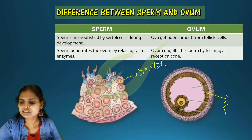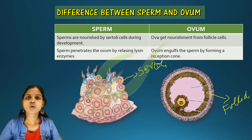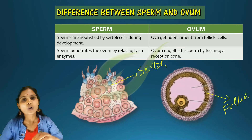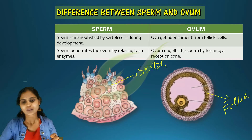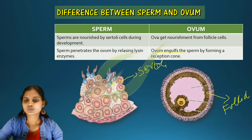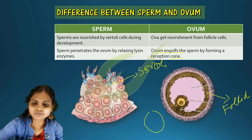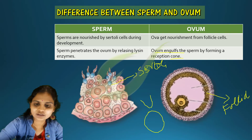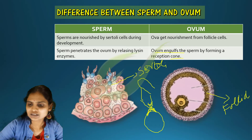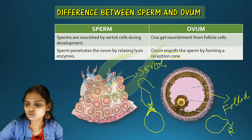During fertilization, the sperm enters the ovum by releasing enzymes present in the acrosome. In the case of the ovum, it starts engulfing the sperm by forming a reception cone — a cone-like structure that forms on the ovum surface where the sperm enters.